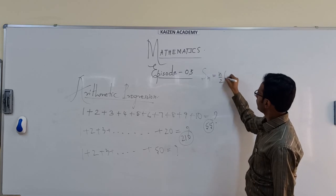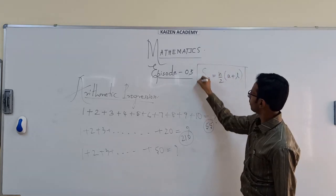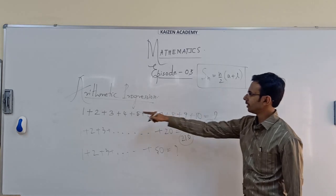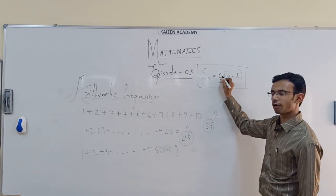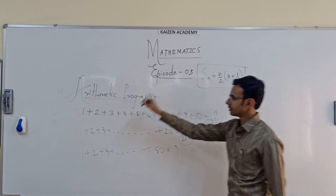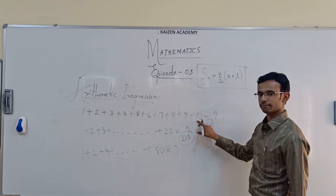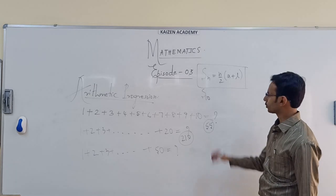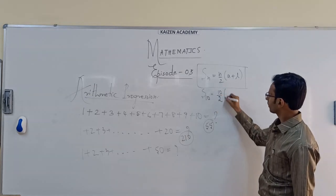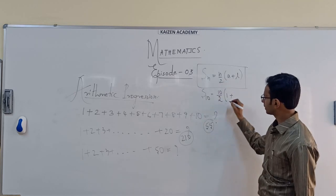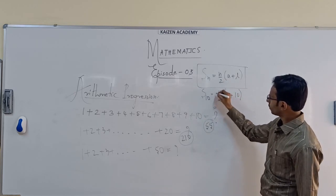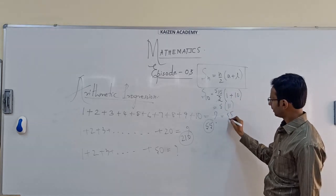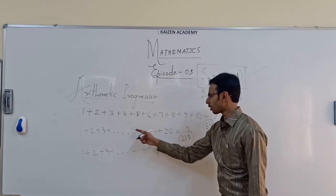The formula is: Sn = n/2 × (a + n), where Sn stands for the summation, n is how many numbers you are adding, a is the first term, and n is the last term. To add 1 to 10: S10 = 10/2 × (1 + 10) = 5 × 11 = 55. This gives the correct total in seconds.